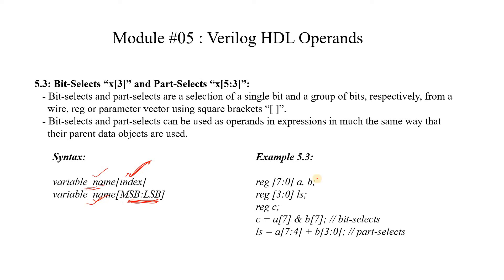You can see we have a and b which are variables of type register. Here they are working as an operand. A particular bit of operand a and a particular bit of operand b is used as an operand in this expression. Here a part of that operand is used in this expression. This is how we can use a specific bit or a part of an operand in the expression.